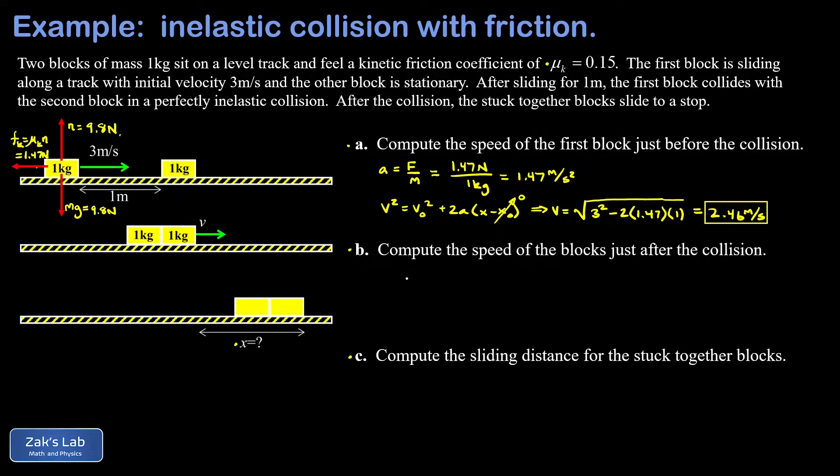Now in part B, we want the speed of the blocks just after the collision occurs. So we're just looking at this instant in time where an inelastic collision occurs, meaning the blocks get stuck together. There is no motion during that instant for friction to do any work. So we don't have to think about that. We're just doing pure momentum conservation here.